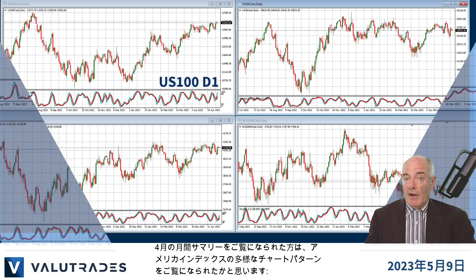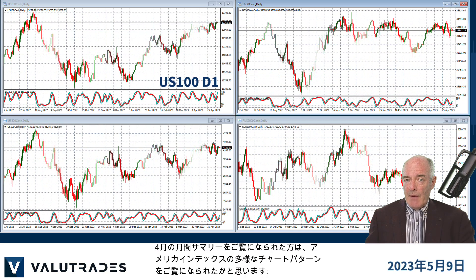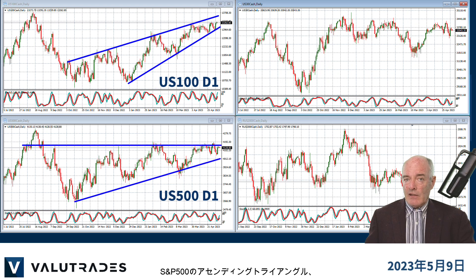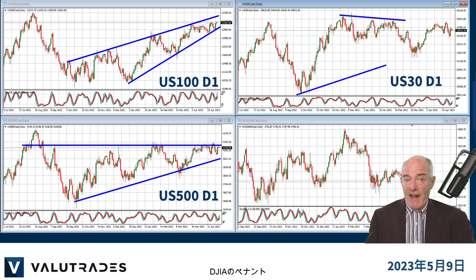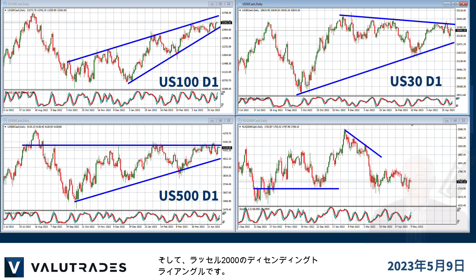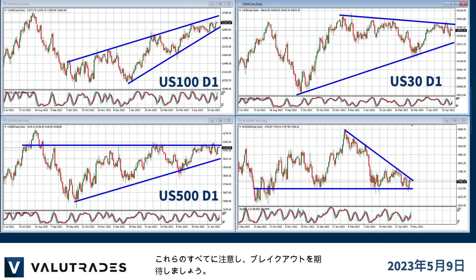If you saw our monthly summary from April, you would have seen these diverse chart patterns on the US indices: a rising wedge on the NASDAQ, an ascending triangle on the S&P 500, a pennant on the Dow Jones Industrial Average, and a descending triangle on the Russell 2000. We need to keep an eye on all of these to expect breakouts.